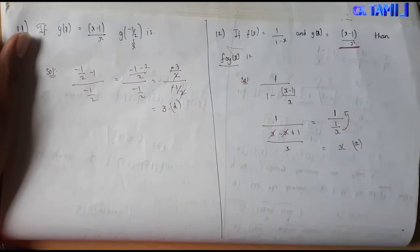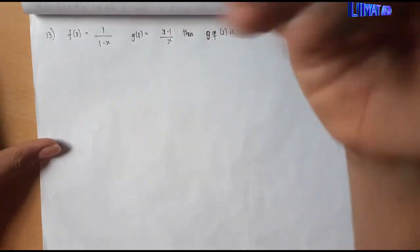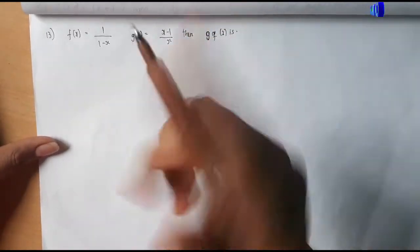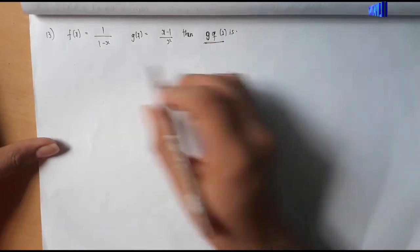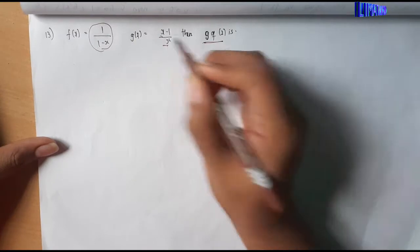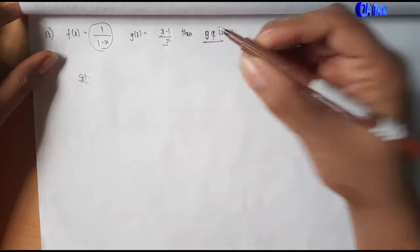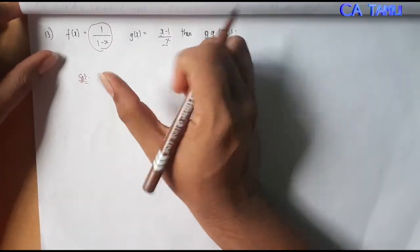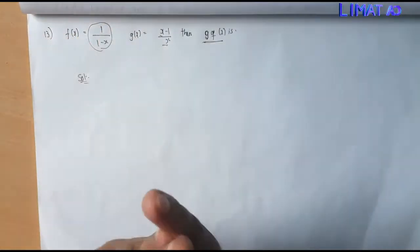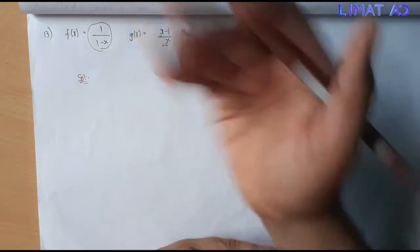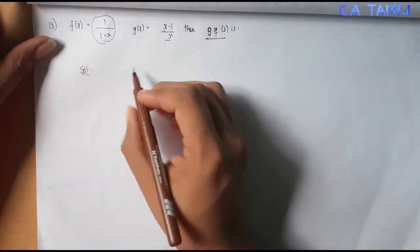Sum number 13. From the next step, we can find the value of f of x. If you want to get the value of f of x, you need to apply the given value. Give the value of f of x, then give the value of x. If you want to apply x, we apply f of x here, and we apply g of x.